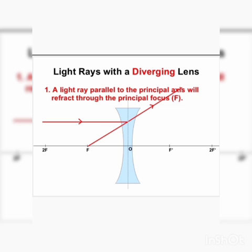When the light is parallel to the principal axis — this is the principal axis — after passing through the concave lens, remember that the light does not bend inward; it bends outward.